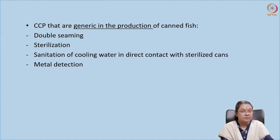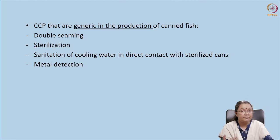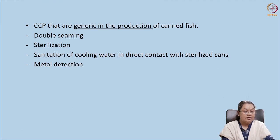There are some CCPs which are generic to the production process. For example, double seaming — the can should be double seamed so there is no leakage and it is intact. Sterilization is also generic; without it the product cannot be made safe. Sanitization of the cooling water is another: it should be potable, well chlorinated, and must not pass contaminants to the food. Metal detection is the fourth. These four steps are generic CCPs for canned fish.